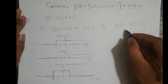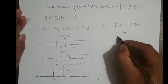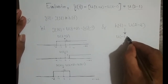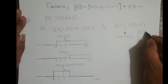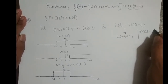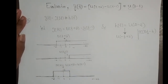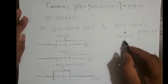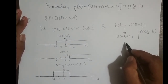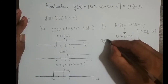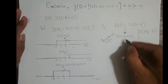Now h(t) = u(2-t) is not in standard form. To bring it to standard form x(at-b), we note it involves both time scaling and time shifting operations. So this involves the precedence rule. I need to apply the precedence rule to perform this operation.